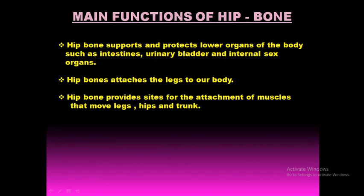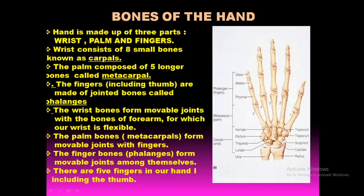Next we look at the bones of the hand. As you can see in the picture, the hand is basically made up of the radius, the end part of the ulna, the palm portion, and also the phalanges or finger portion. So the hand is composed of the wrist, the palm, and the fingers.